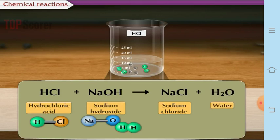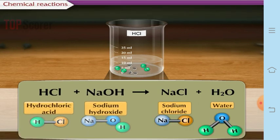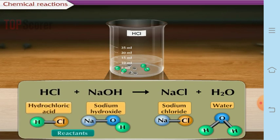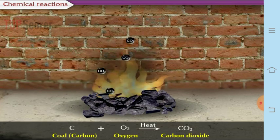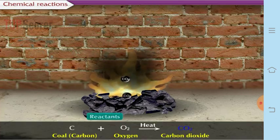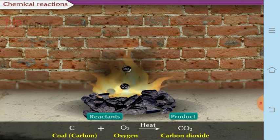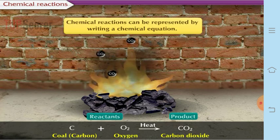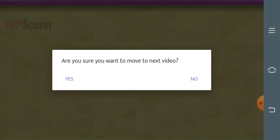A chemical reaction is a process in which bonds in existing substances break and new bonds form to produce new substances. For example, sodium hydroxide reacting with hydrochloric acid forms sodium chloride and water. The substances on the left side of the equation are called reactants and those on the right are called products. Chemical reactions can be represented by chemical equations, which we will study in the next video.